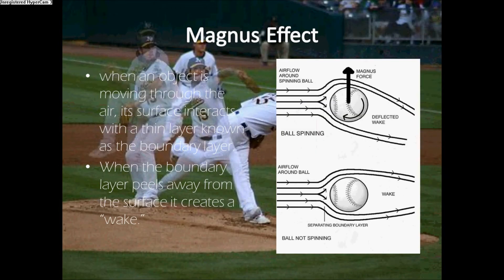When an object is moving through the air, its surface interacts with a thin layer known as the boundary layer. When the boundary layer separates away from the surface, it creates drag.